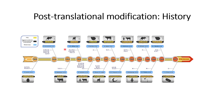The next post-translational modification that was identified is methylation. Methylation mainly occurs within the nucleus and it is related to histone proteins — histone proteins are able to function or be translated when they are methylated.